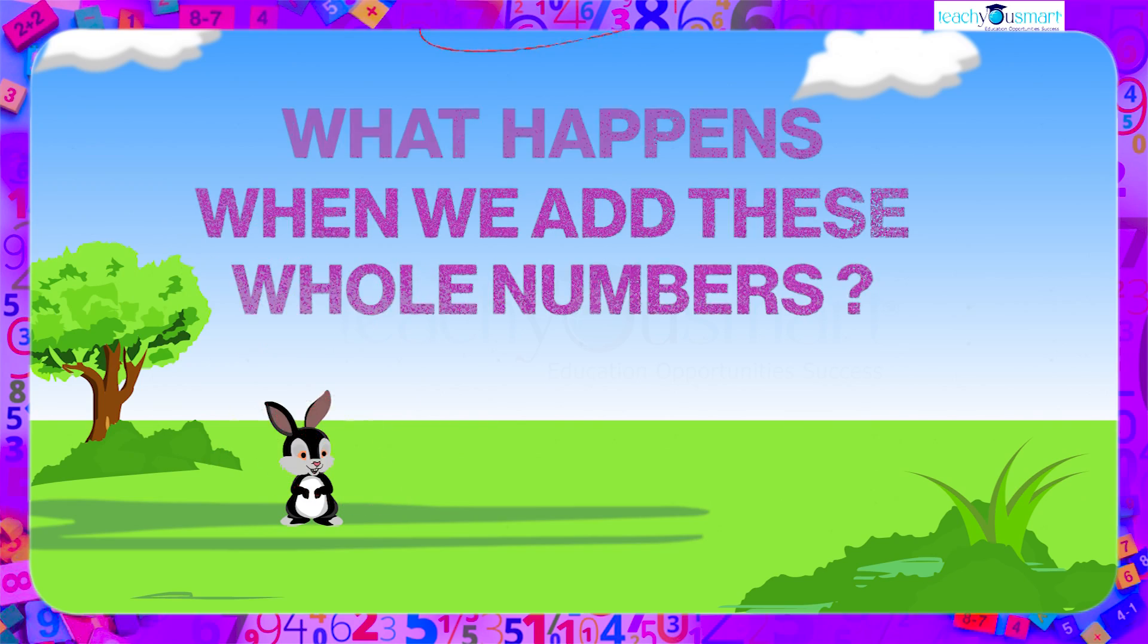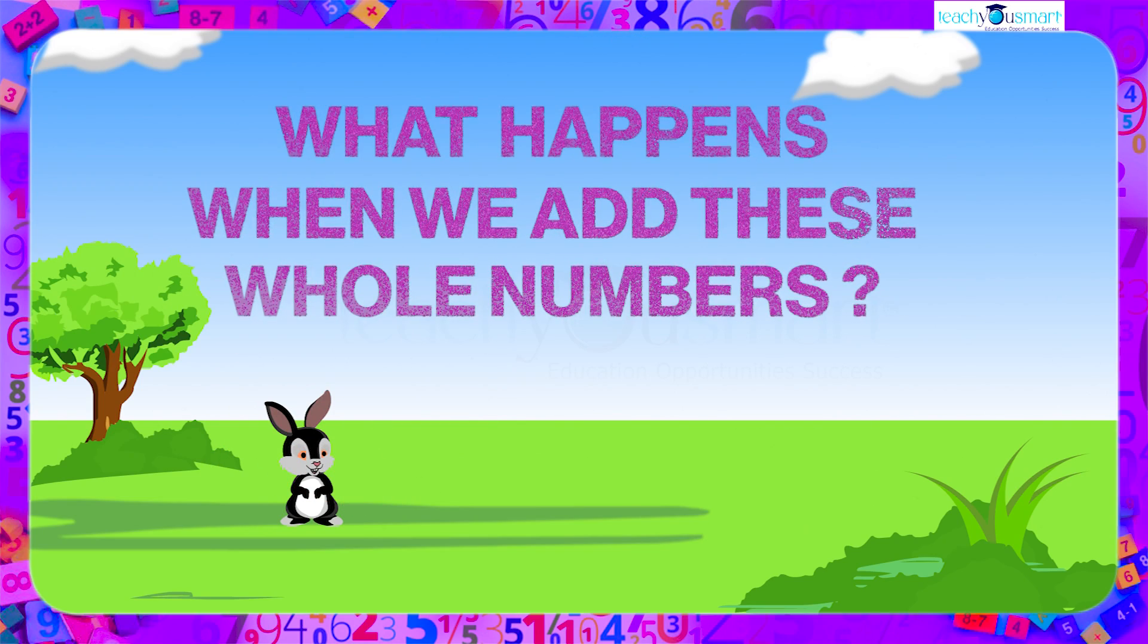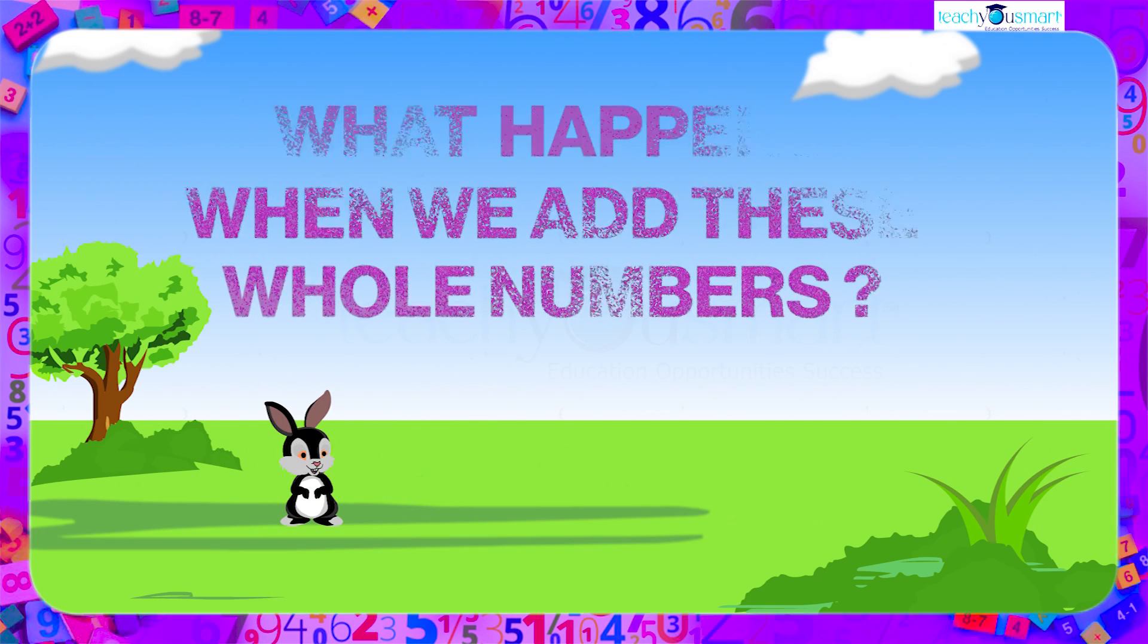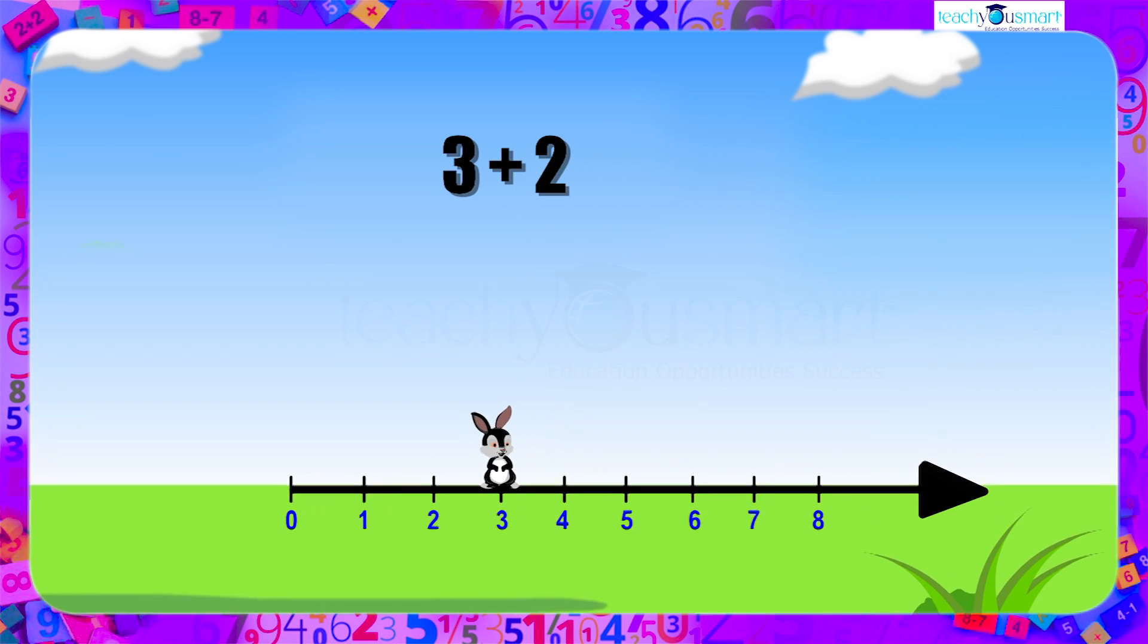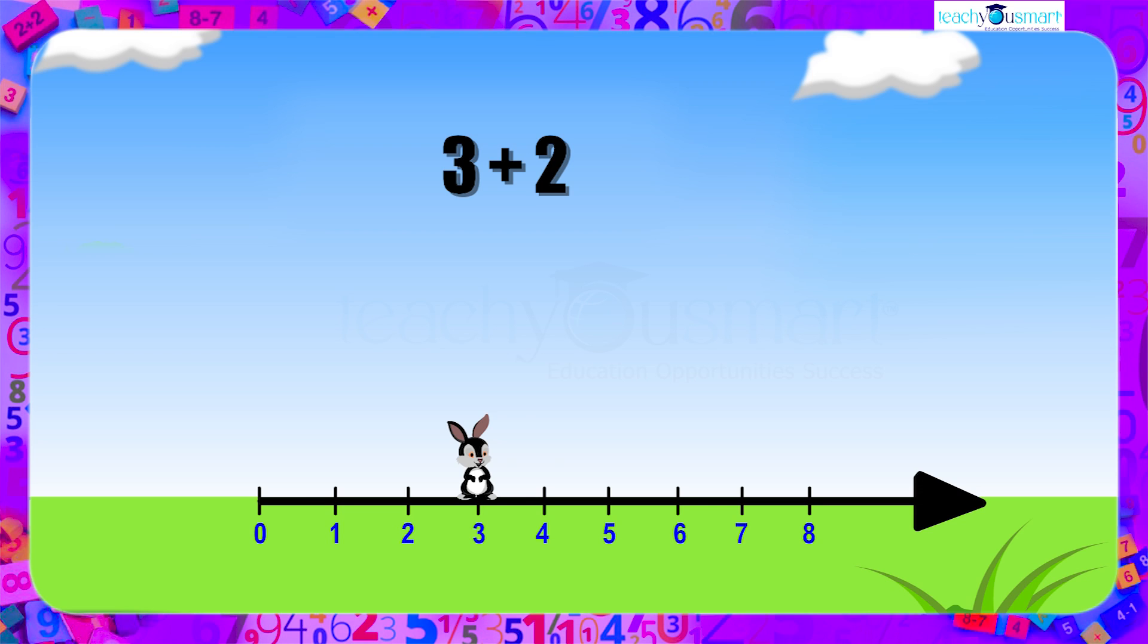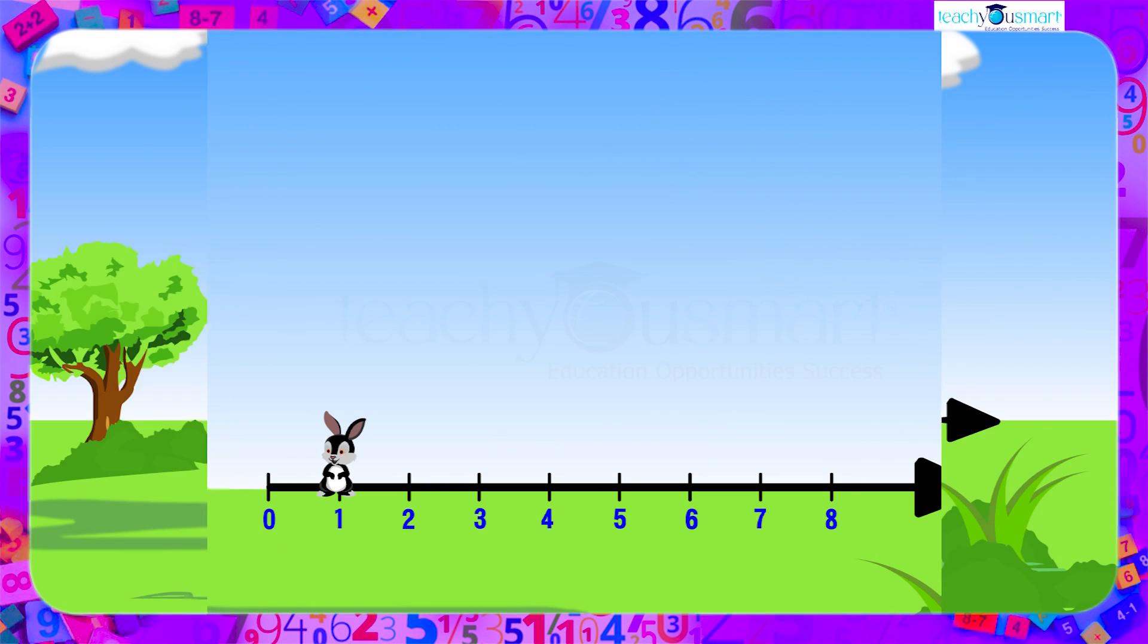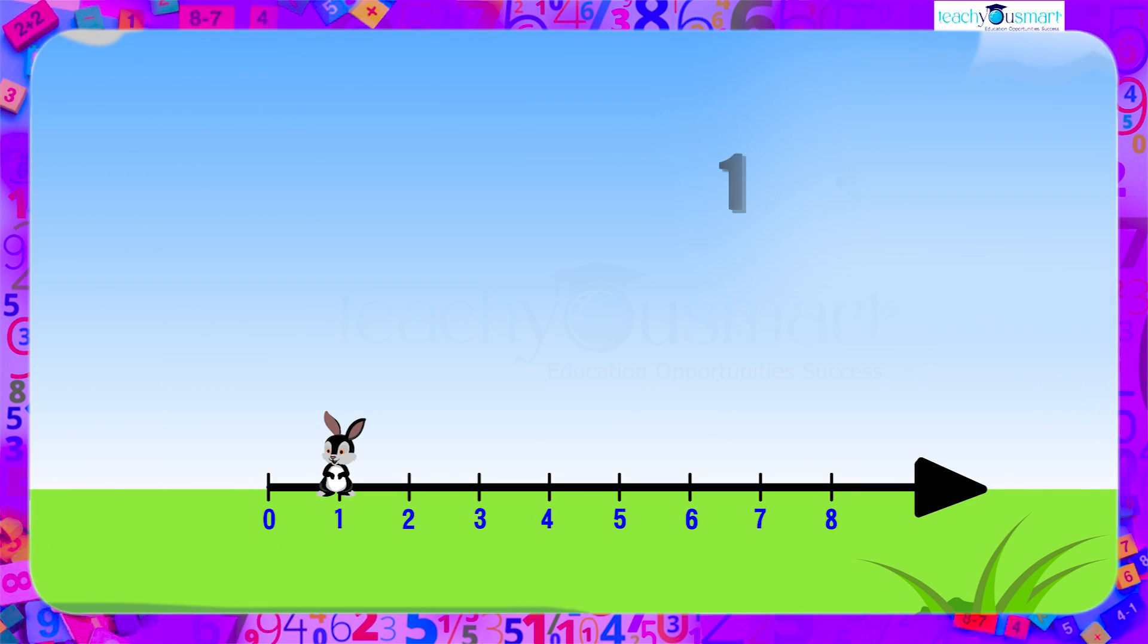Now let's see what happens when we add these whole numbers using the number line. When we add 3 and 2 on the number line, we start from 3, then move 2 steps to the right of 3 and get 5. Similarly, when we add 1 and 2, starting from 1 we move 2 steps to the right of 1 and get 3.